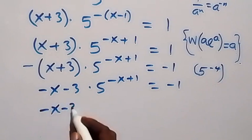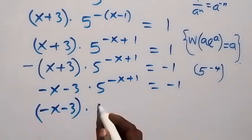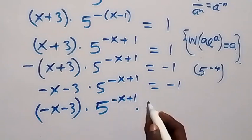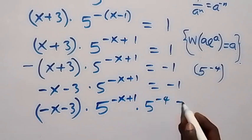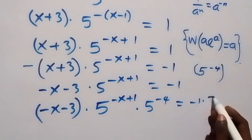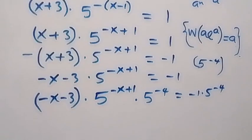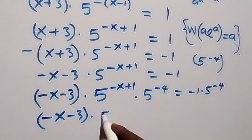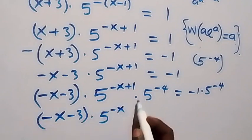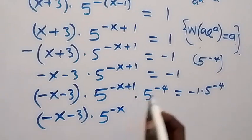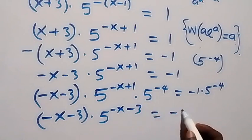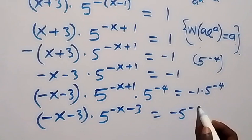We have minus x minus 3, then times 5 raised to the power minus x plus 1, times 5 raised to the power minus 4 here, equals to minus 1 times 5 raised to the power minus 4. That gives us minus x plus 1 minus 4, which becomes minus x minus 3. Equals to minus 5 raised to the power minus 4.